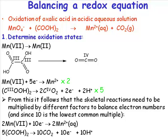That will give us the following equations: 2MnO4⁻ + 10e⁻ → 2Mn²⁺, and we have 5 oxalic acids going to 10 carbon dioxide molecules, 10 electrons, and 10 protons.